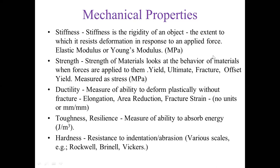Stiffness is the rigidity of any object. Strength is the behavior when any force is applied to the material. Ductility is the measure of deforming drastically without any fracture — the Bangla name of ductility is 'nomo neo.' Toughness or resilience is 'shohan shilata.' Hardness is 'tamrajani.'